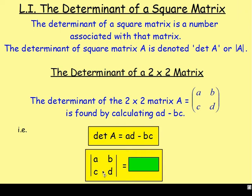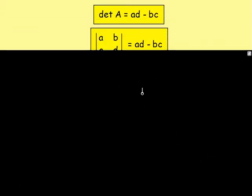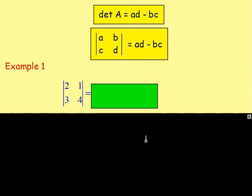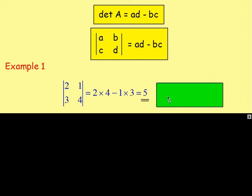Another way of writing that is the matrix with entries A, B, C, and D with modulus lines either side, meaning you want the determinant — again it's AD minus BC. Example 1: we have the matrix 2, 1, 3, and 4. We work out A times D take away B times C: 2 times 4 take away 1 times 3, which gives us 5.